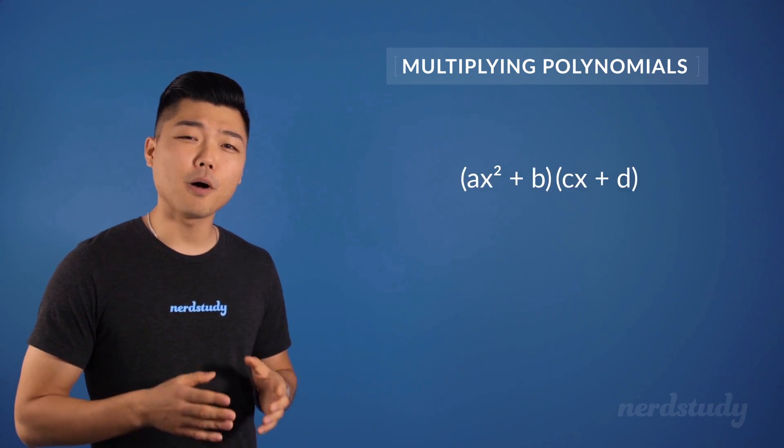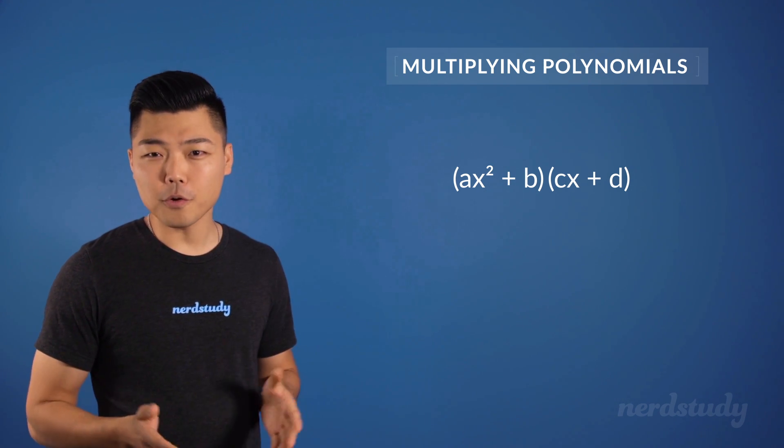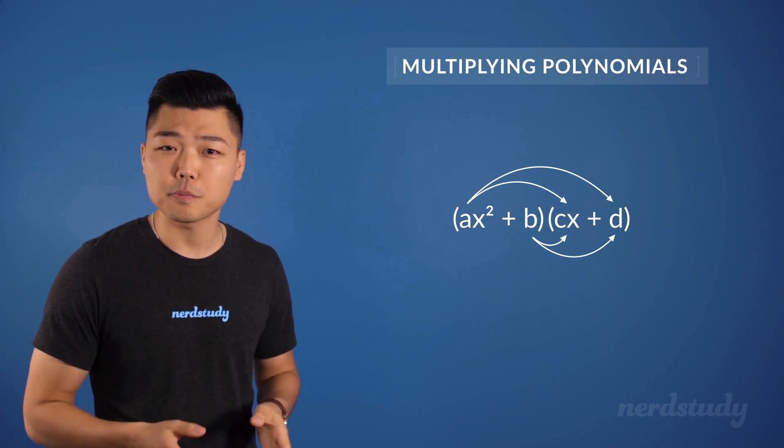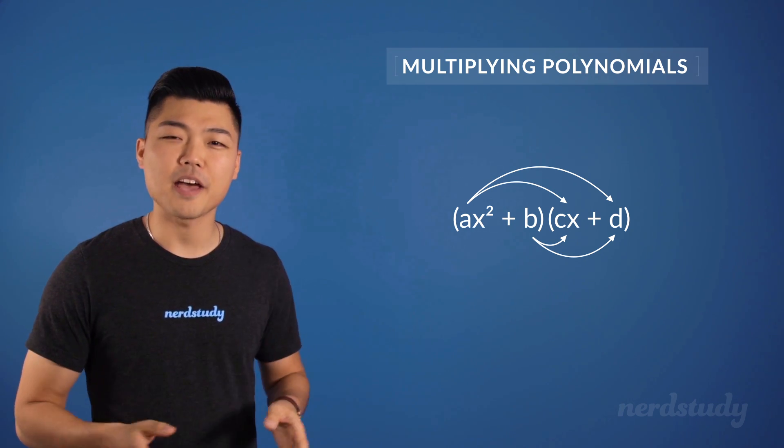Awesome. So all you need to remember when multiplying polynomials is that whether you use the FOIL method or not, as long as every term in each polynomial is being multiplied with each other, you should end up with the correct answer.